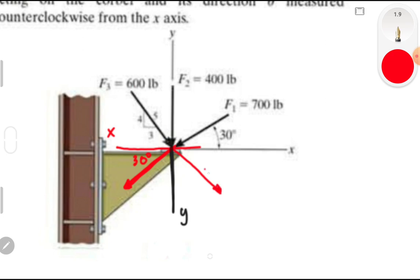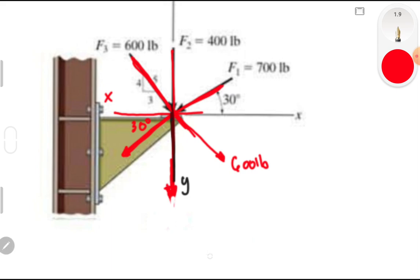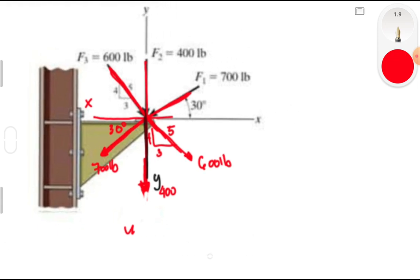The projection of F3 (600 pounds) is extended through the line. F2 is 400 pounds directed horizontally. Take note that pounds is already a unit of force in the English unit system. The 700 pounds force is also identified. The angle of the 600 pounds force involves the 3-4-5 ratio.